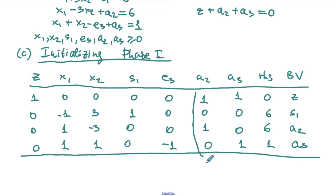In phase 2, step 0: there is only one negative entry in row 0, so x2 is the entering variable. Performing the ratio test, we look for positive entries in the x2 column but there are none. Since we cannot perform the ratio test, x2 can increase to positive infinity without violating any constraints, and the objective tends to positive infinity. Therefore, the problem is unbounded.